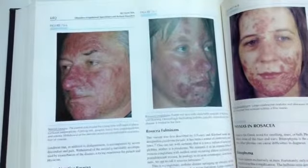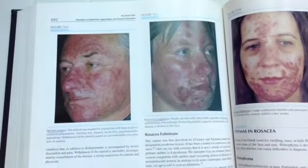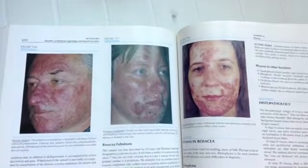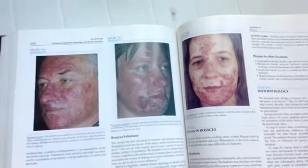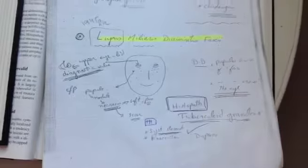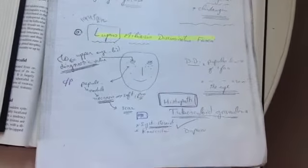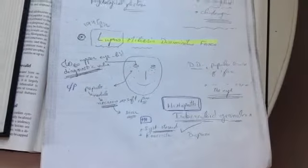Here also we can see steroid rosacea to the left, and rosacea conglomata, and rosacea fulminans to the right. After that we will talk about the lupus miliaris disseminatus fasciae.